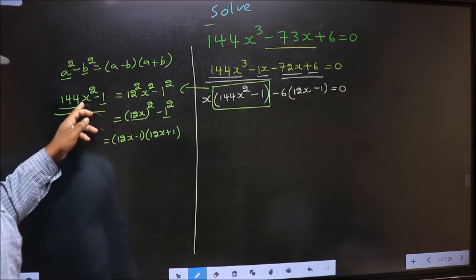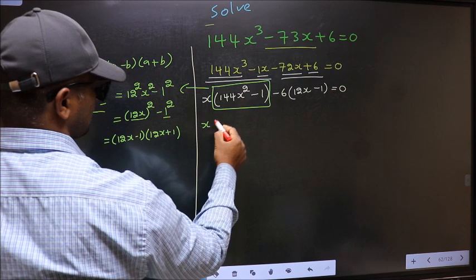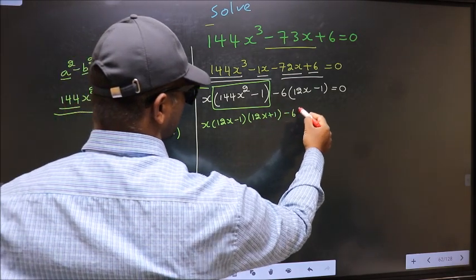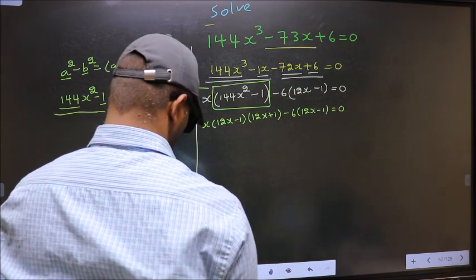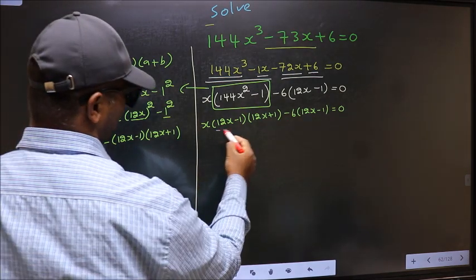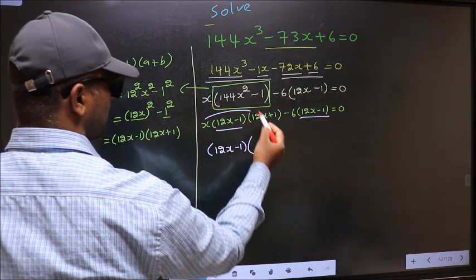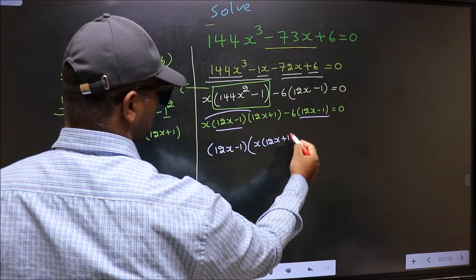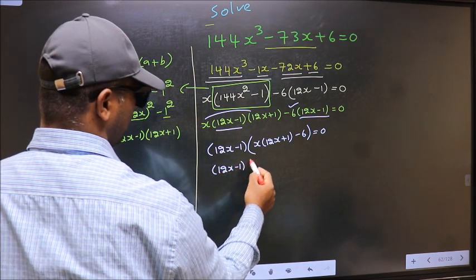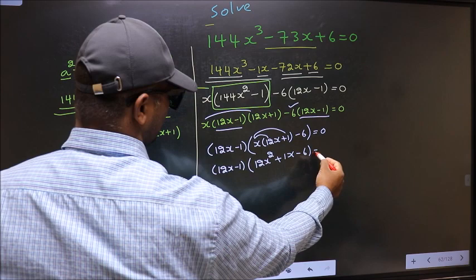In place of the quadratic, we write (12x minus 1)(12x plus 1), so the equation becomes x(12x minus 1)(12x plus 1) minus 6 equal to 0. From this equation, what can be taken out common is (12x minus 1). Taking (12x minus 1) outside, we are left with x(12x plus 1) minus 6 equal to 0. Opening the brackets gives 12x² plus x minus 6 equal to 0.